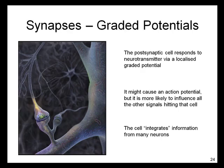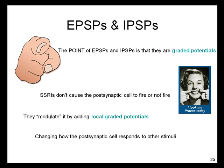Another place where graded potentials occur is in the synapse. The postsynaptic cell responds to neurotransmitter via a localized graded potential. It might cause an action potential, but it is more likely to influence all the other signals hitting that cell. The cell then integrates the information from many neurons. This is the point of EPSPs — excitatory postsynaptic potentials — and IPSPs — inhibitory postsynaptic potentials. EPSPs and IPSPs are graded potentials. This is important in the way that psychotropic drugs act. SSRIs such as Prozac don't cause the postsynaptic cell to fire or not fire. SSRIs modulate the voltage of the postsynaptic cell by adding local graded potentials.